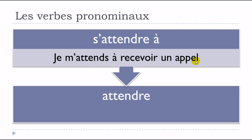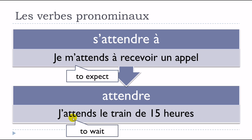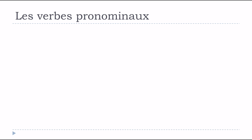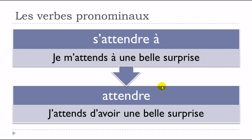Examples: je m'attends à recevoir un appel — I expect to receive a call. And j'attends le train de 15 heures — I'm waiting for the 3pm train. Another example: je m'attends à une belle surprise. It would also be possible to use attendre: j'attends d'avoir une belle surprise — expressing almost the same idea without the pronominal form.